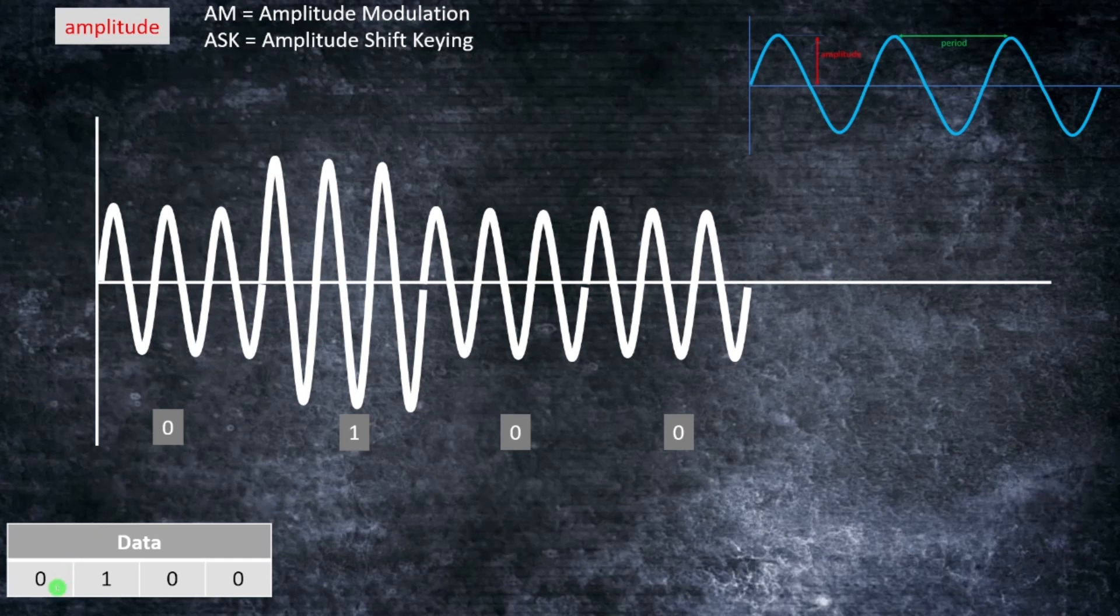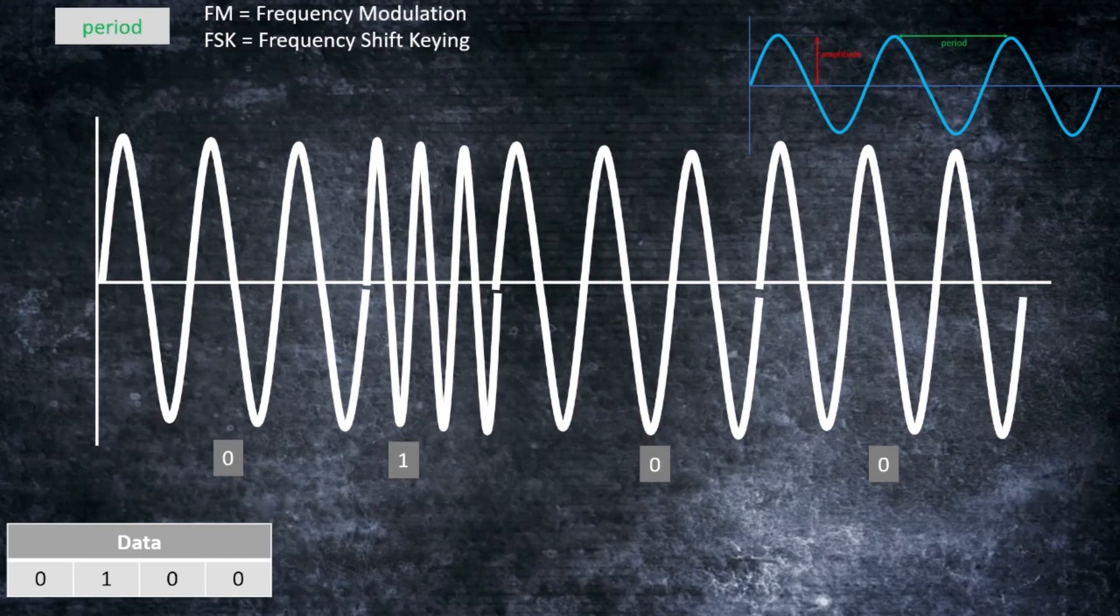So let's say we want to send the signal 0-1-0-0. That means that the first signal would be a weak one representing a zero. We can have the next part with a higher amplitude, so we're just having the same frequency but increasing the amplitude—this is a one. The next part is weaker again, a zero, and the same for the last. So this means that this will be 0-1-0-0.